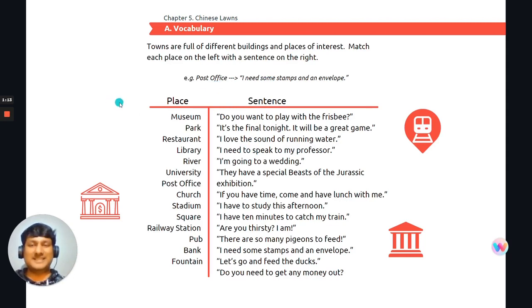So let's begin with places. The first place is a museum, so a place of art, park, a place to play, restaurant, a place to eat, library, a place to read, river, a place to sit and maybe relax and admire the surroundings, university, a place of study, post office, a place to obviously send your post, church, a place of prayer as well as you could have weddings there and some other religious type of events. Okay, moving on to stadium. A stadium is a place where they probably play a lot of sports or games.